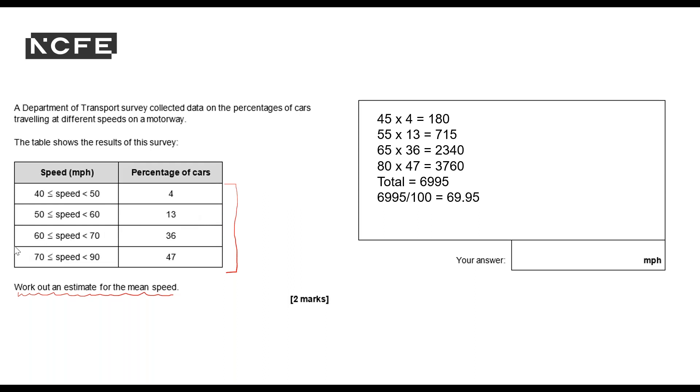It says an estimate is, because I've calculated the mean from a group frequency table, so that's always going to be an estimate. I can round this up to 70 miles per hour. Providing I've shown my unrounded value in the answer box, then I'm pretty sure that 70 miles per hour is going to be accepted.